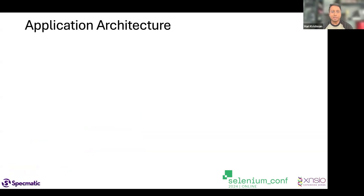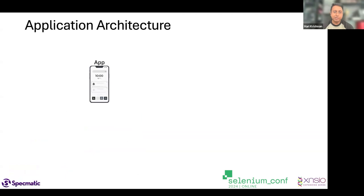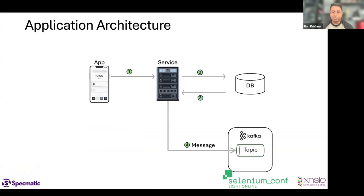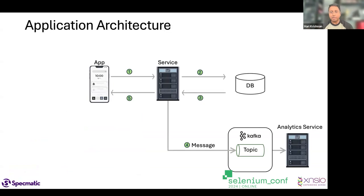Let me put a lay of the land in terms of the application architecture for a system we'd like to test. I have a mobile application which talks to a service, which in turn pulls data from a database and also drops a message to a Kafka server, through which an analytic service gets information about what's being queried. This is all the components in our application that I'd like to test.